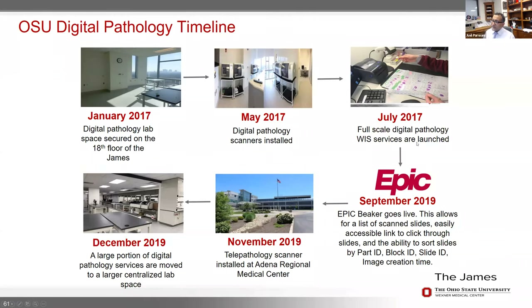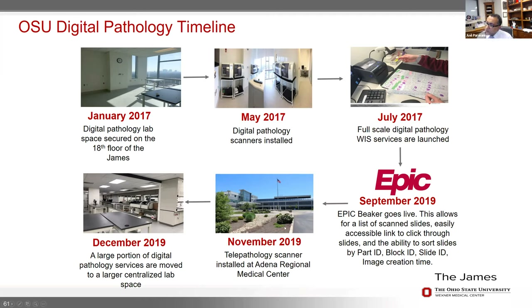We started signing out and archiving cases in June of 2017. In 2018, we started using these images for primary diagnosis. More recently last year, we moved to a new lab information system, linking all these scanned slides to the patient information system, electronic medical record, and lab information system. We also started providing services to smaller hospitals around Ohio, deploying small scanners for frozen sections and FNAs. In December of last year, we moved to a large centralized lab — about three miles away from the main campus — where we can do all the histology and scanning in one place.